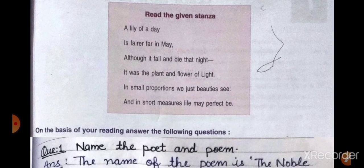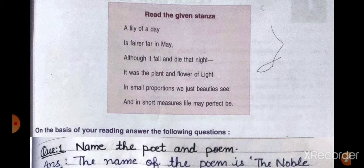Here is our stanza. A lily of a day is fairer far in May. Although it fall and die that night, it was the plant and flower of light. In small proportions, we just beauties see, and in short measures life may perfect be. This stanza is about the lily.